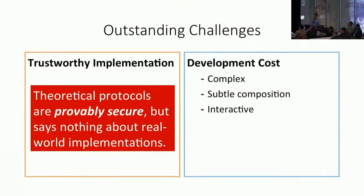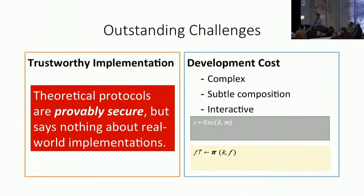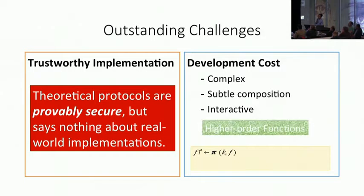The second challenge also connects to the complexity of implementation. Because this kind of protocols is much more complex and getting interactive. It's very hard to implement correctly. Just to give you a tiny example, the traditional cryptography only takes the static message. While today's world uses these high order functions.